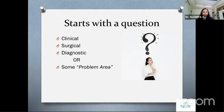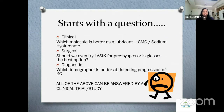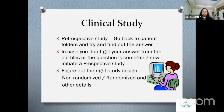Research starts with a question or a problem. It could either be a clinical question, a surgical or diagnostic question, or it could be some problem area. Questions can be very simple, like which molecule is better as a lubricant — CMC or sodium hyaluronate — or a diagnostic problem as to which topographer can diagnose progression better in KCS. These are basic clinical questions we encounter all the time. We could do either a retrospective study, go back to patient folders and find an answer, or plan a prospective study.